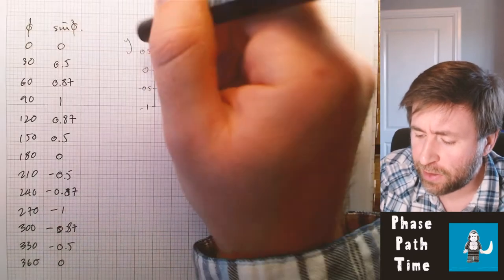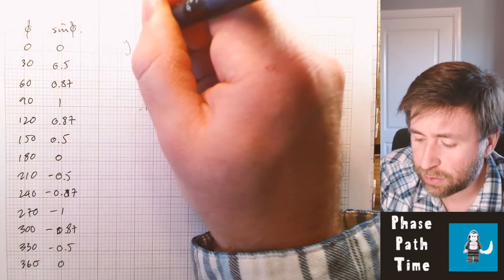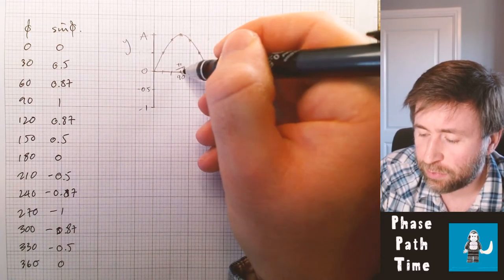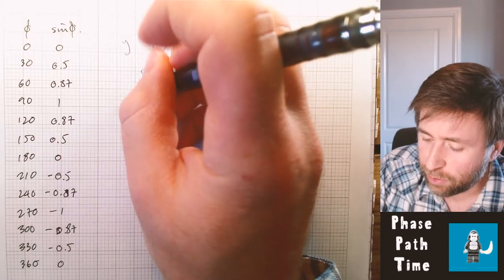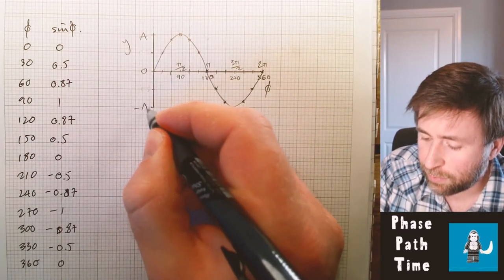Well, in a wave, that value, that maximum 1 is not just 1, it's the amplitude. It's the maximum displacement from the zero position. In the opposite direction, in the negative direction, this is minus the amplitude.